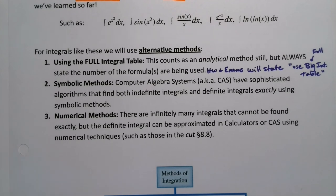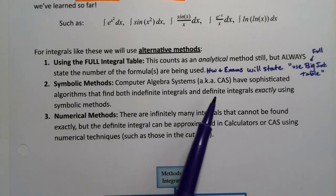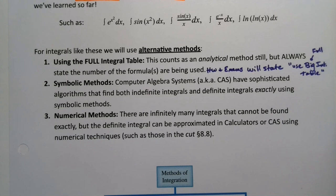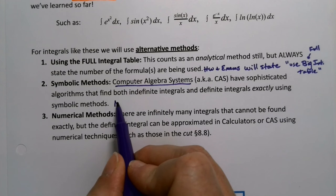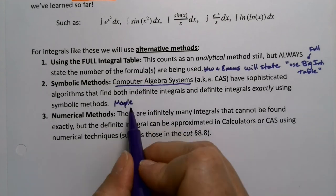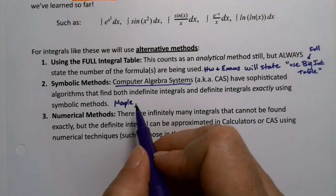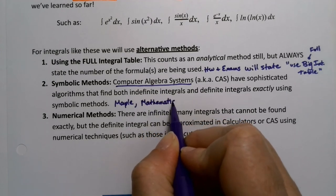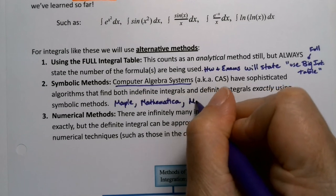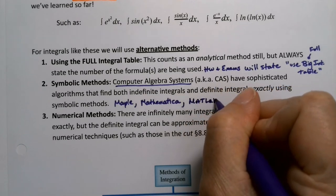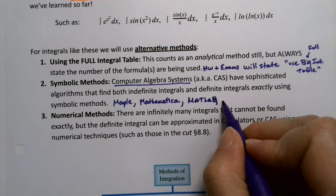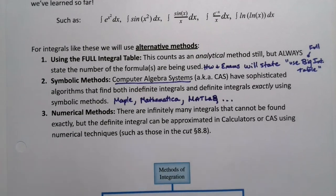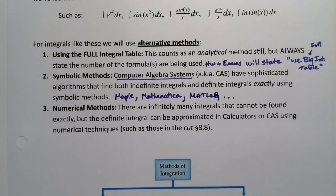Now, there are lots of integrals that cannot be solved even with that. And so we use different symbolic methods, such as computer algebra systems. So computer algebra systems are programs such as MAPLE. That's the one we use at Jackson College. Me personally, I went to Michigan State and we use Mathematica there. MATLAB is another big one. Symbolab, those kinds of things. Those are called computer algebra systems. They're sophisticated programs that will actually find definite and indefinite integrals for you.